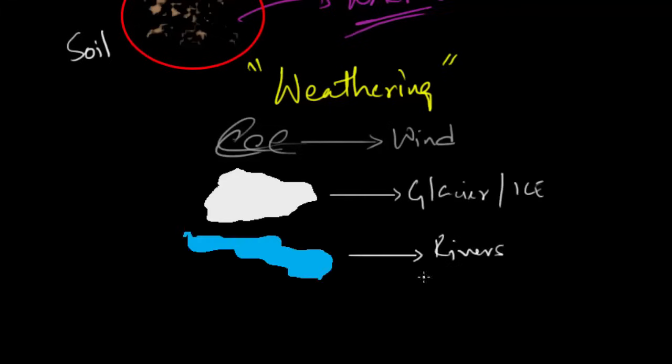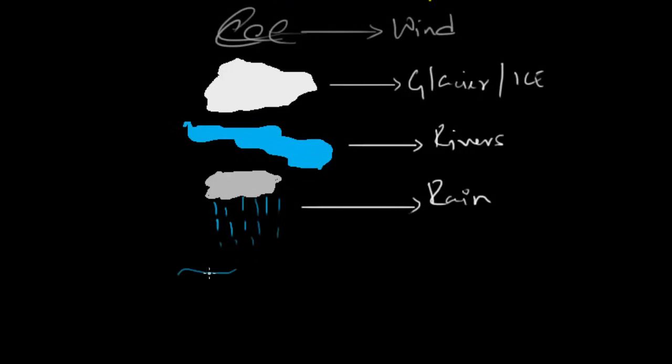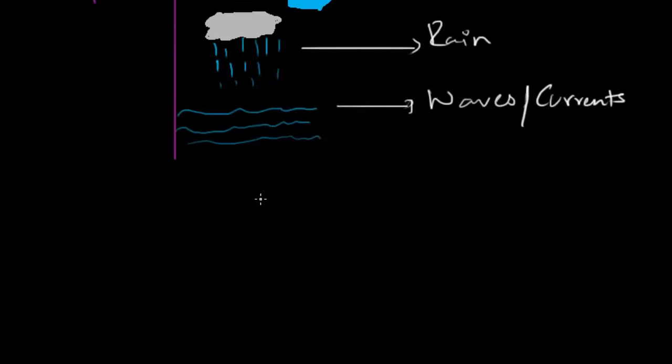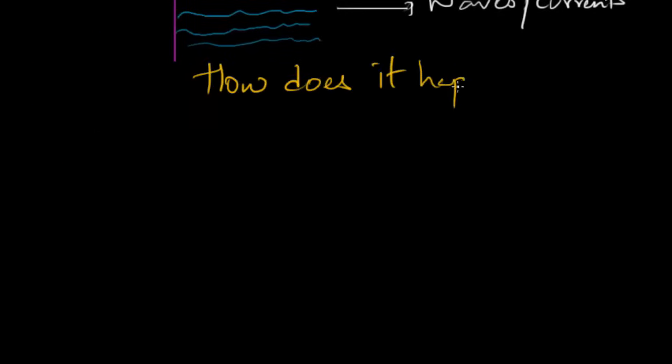Rocks get weathered due to activities of wind, glaciers, rivers, rain, waves and currents. So these are agents that help in weathering rocks. But how does it happen? That's what we'll see now.